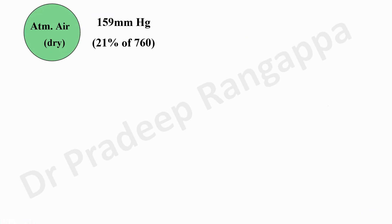As most of you would know, the oxygen present in the air is approximately 21%, and at sea level the atmospheric pressure is around 760 mmHg. When you multiply 21% by 760, the oxygen level at atmospheric air would be 159 mmHg.